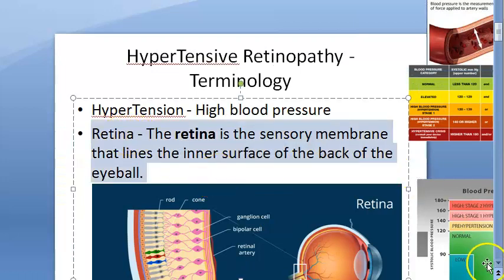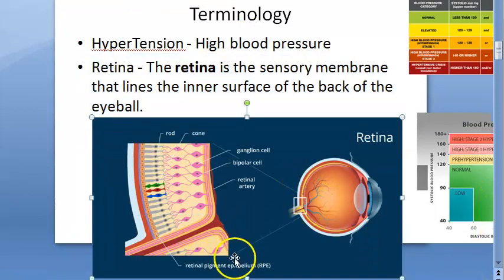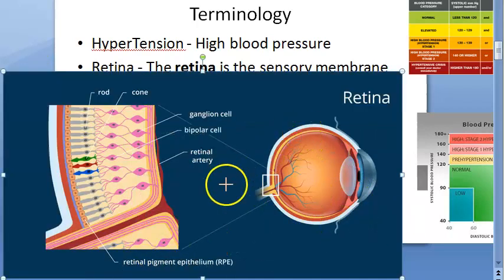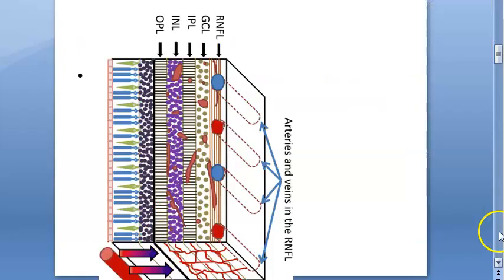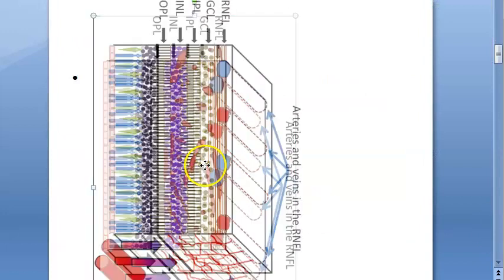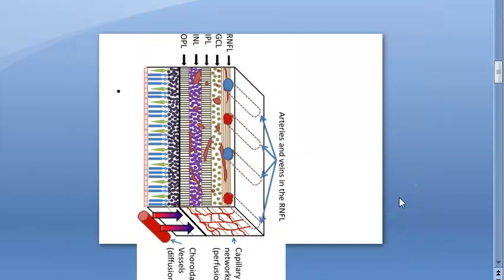The retina is the neurosensory membrane that lines the inner surface of the back of the eyeball. You have the sclera, then the choroid, then the innermost retina — shown as the yellow structure. The retina has its own blood vessels and blood supply. If there is hypertension, what happens to these blood vessels causing retinal damage is called retinopathy — 'pathy' always means pathology.